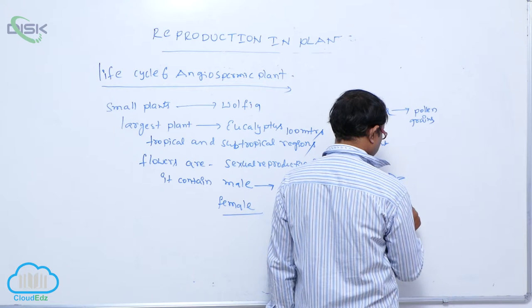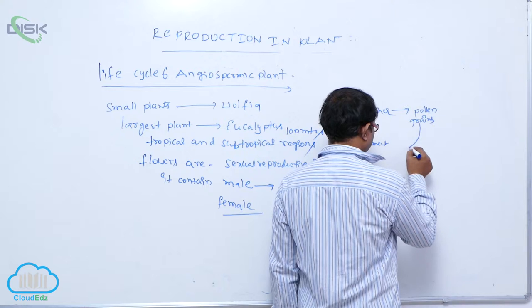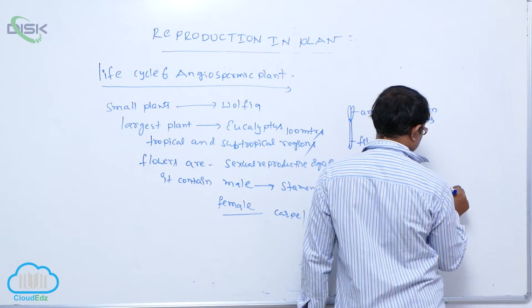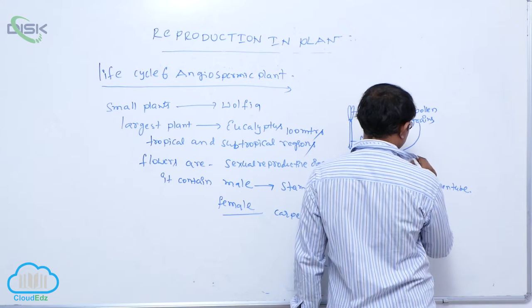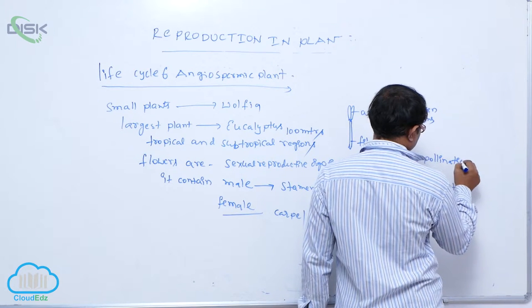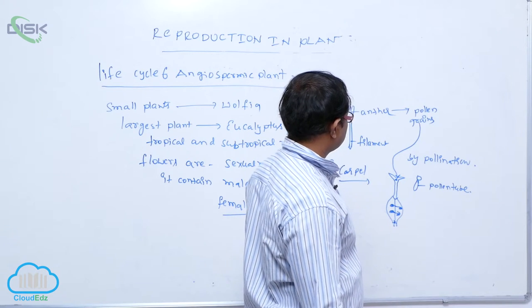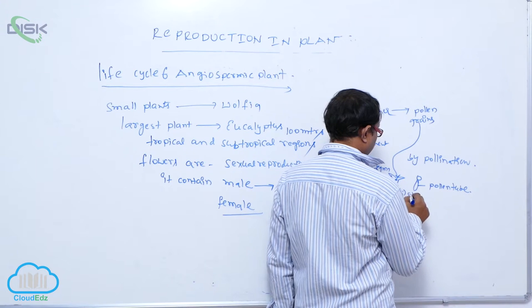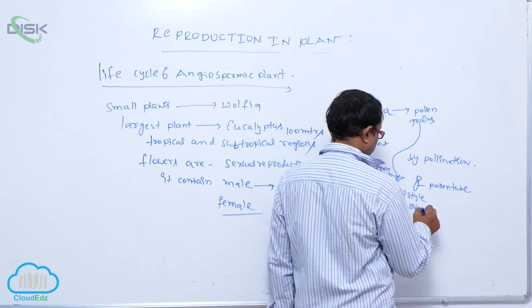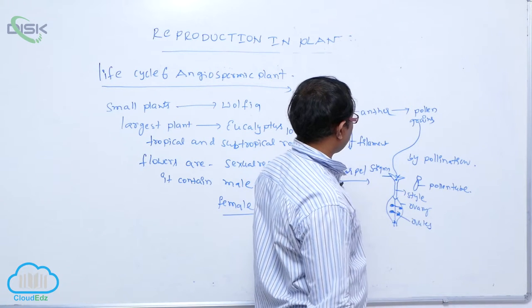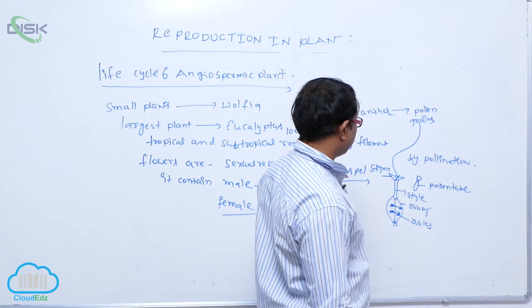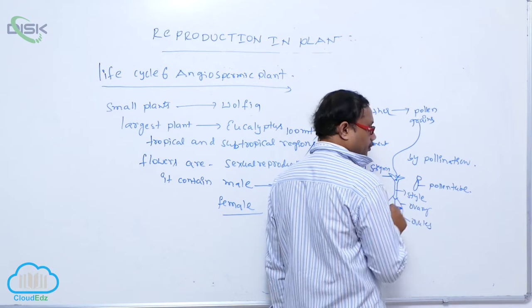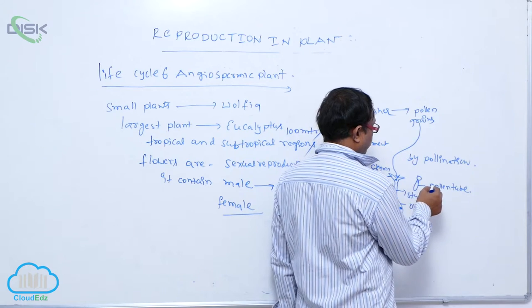Pollen grains fall on the stigma by the process of pollination and form a pollen tube. This pollen tube grows down through the style and reaches the ovary and then the ovule. This process involves fertilization.